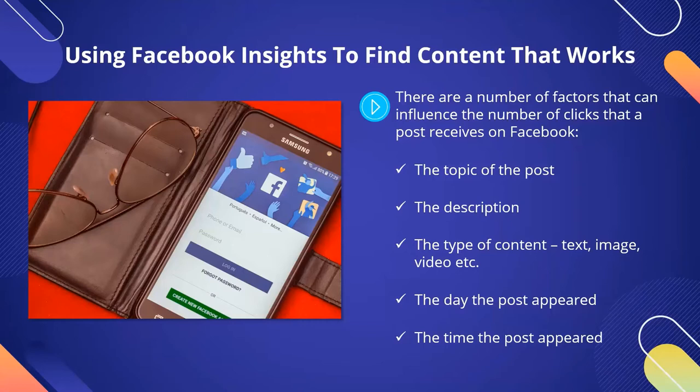There are a number of factors that can influence the number of clicks that a post receives on Facebook: the topic of the post, the description, the type of content (text, image, video, etc.), the day the post appeared, and the time the post appeared. We recommend that you use a spreadsheet, such as Google Sheets, and add your most clicked posts to the sheet along with this information. This will provide you with even more insight into what works the best. The aim with your Facebook posts is to get your audience to click, so don't skip this step.